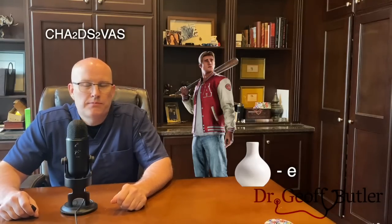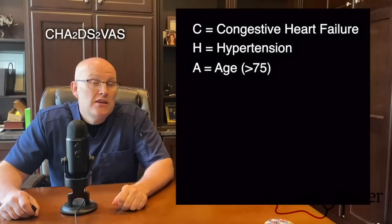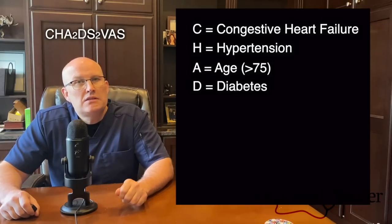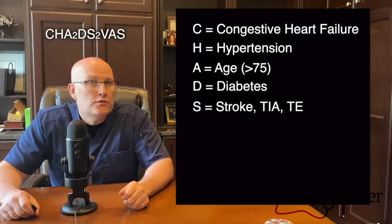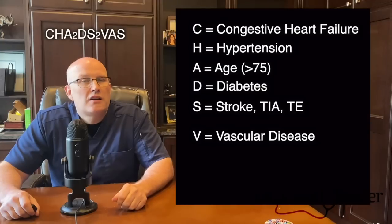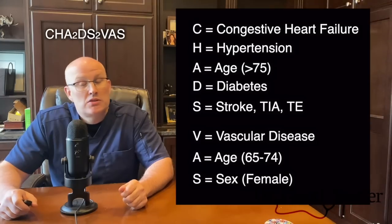How do we determine which patients we put on anticoagulation? We have a scoring system called CHADS-VASC. Each letter stands for something: C is congestive heart failure, H is hypertension, A is age greater than 75 (scores two points), D is diabetes, S is stroke, TIA, or thromboembolic event (also scores two points), V is vascular disease like a prior heart attack, A is age 65–74 (scores one point), and C is female sex (scores one point).